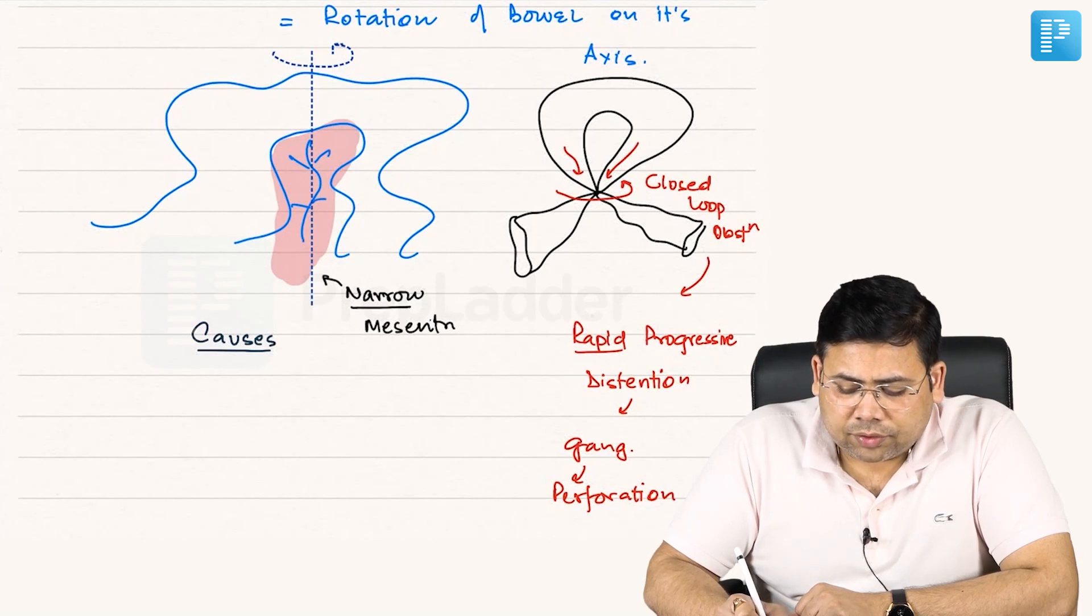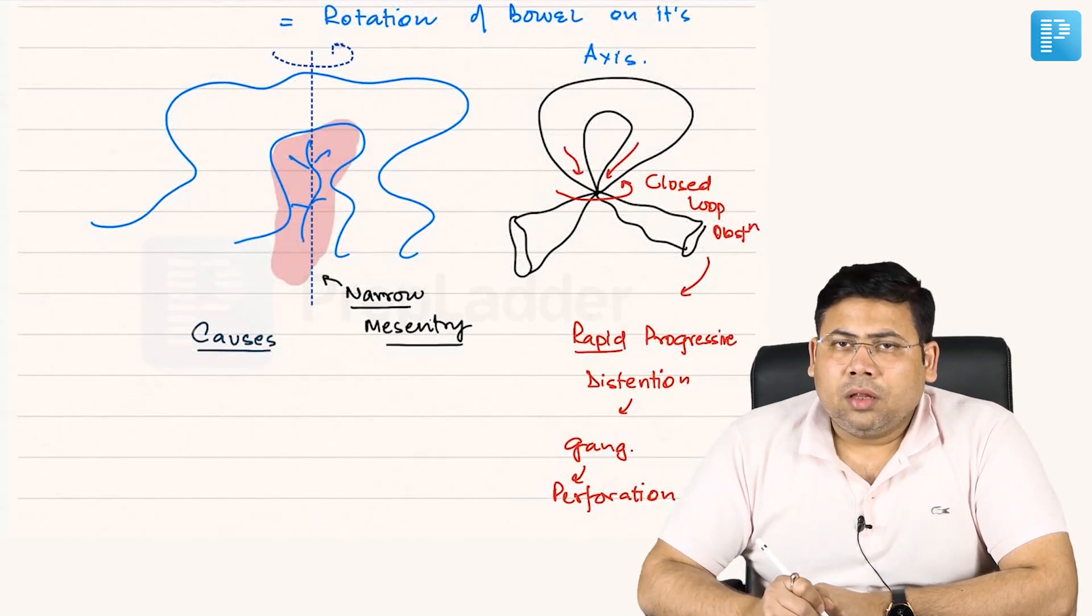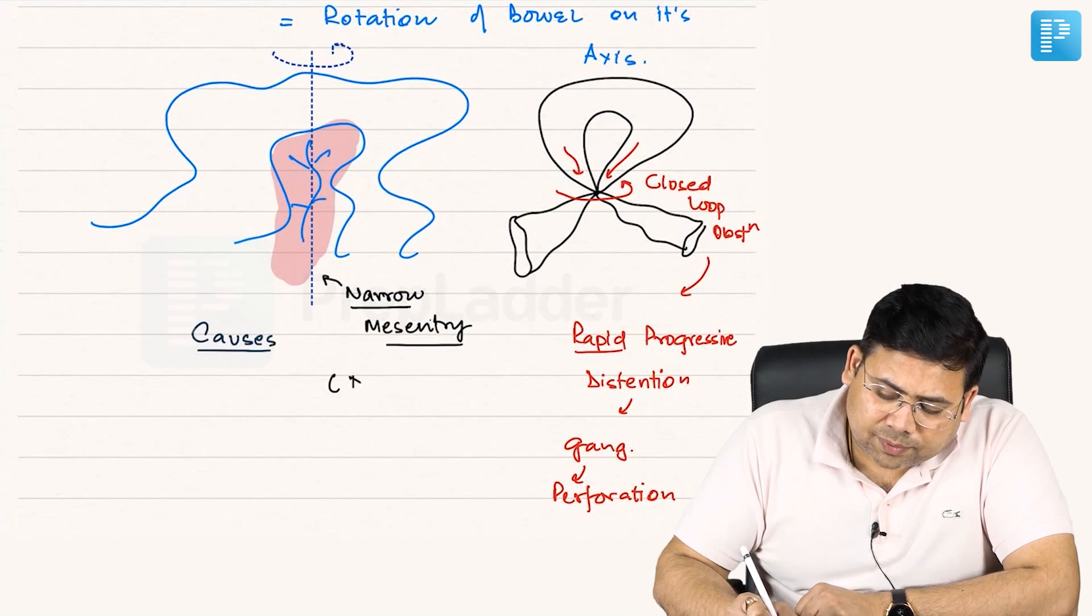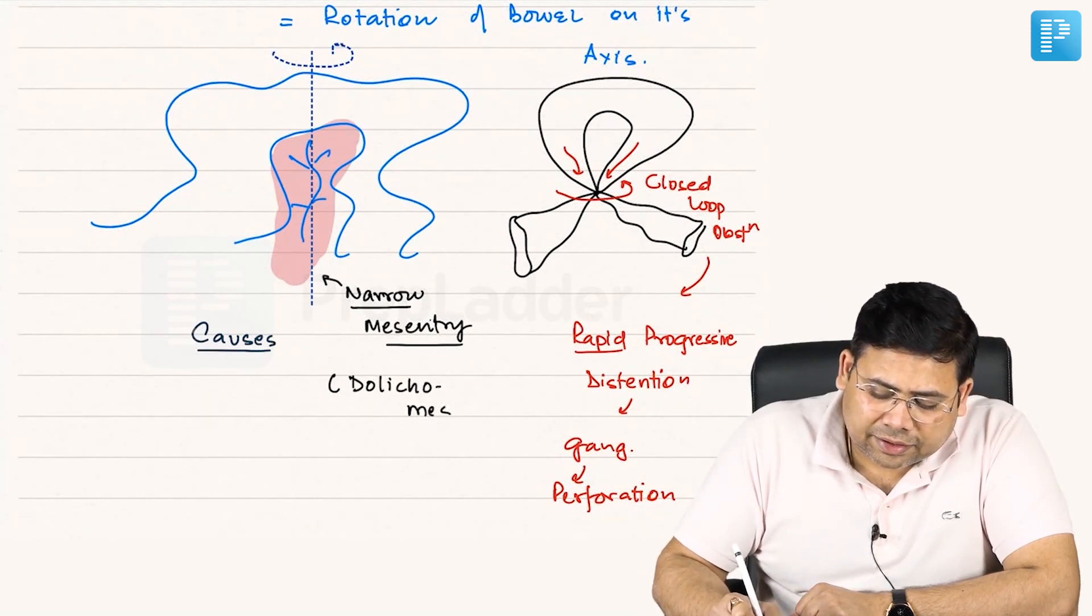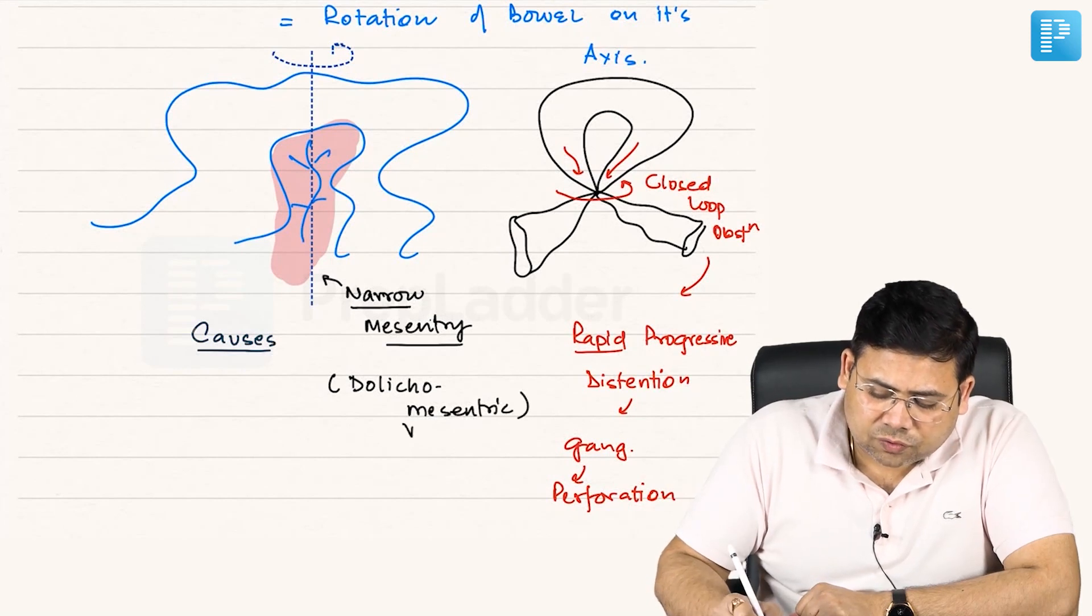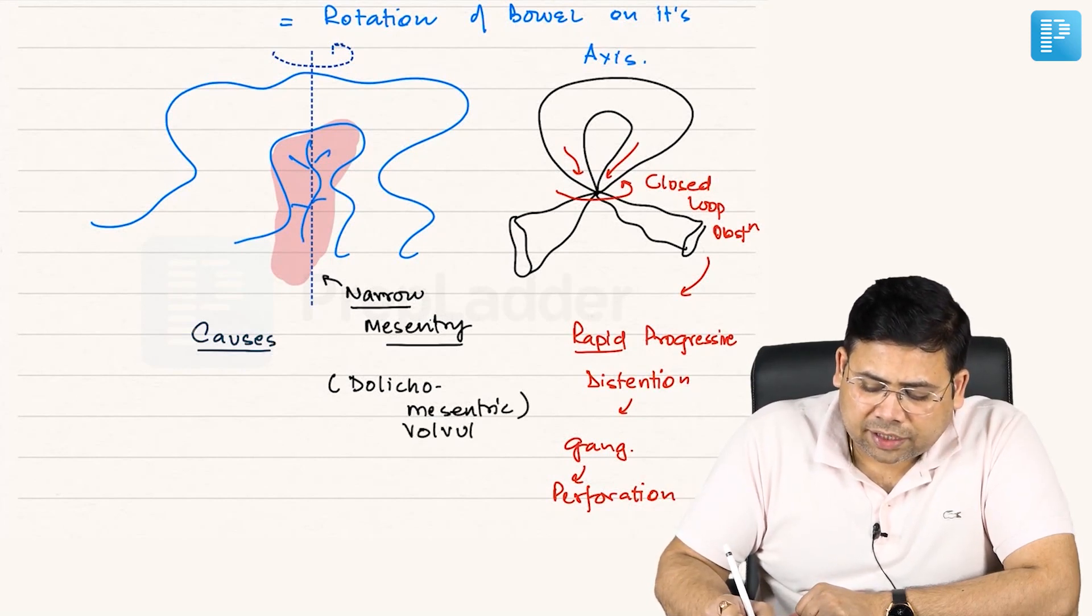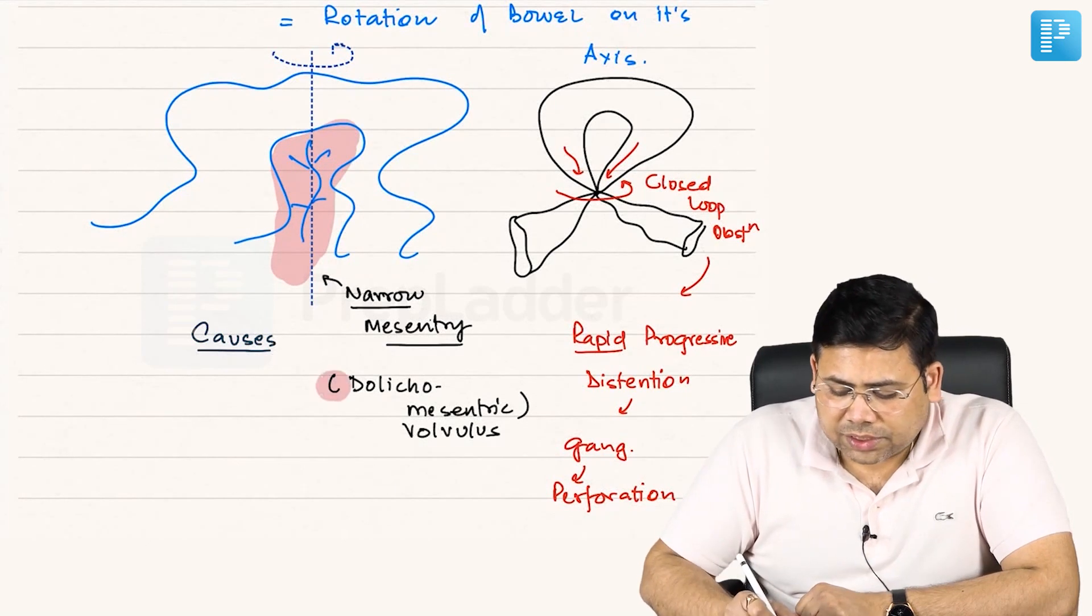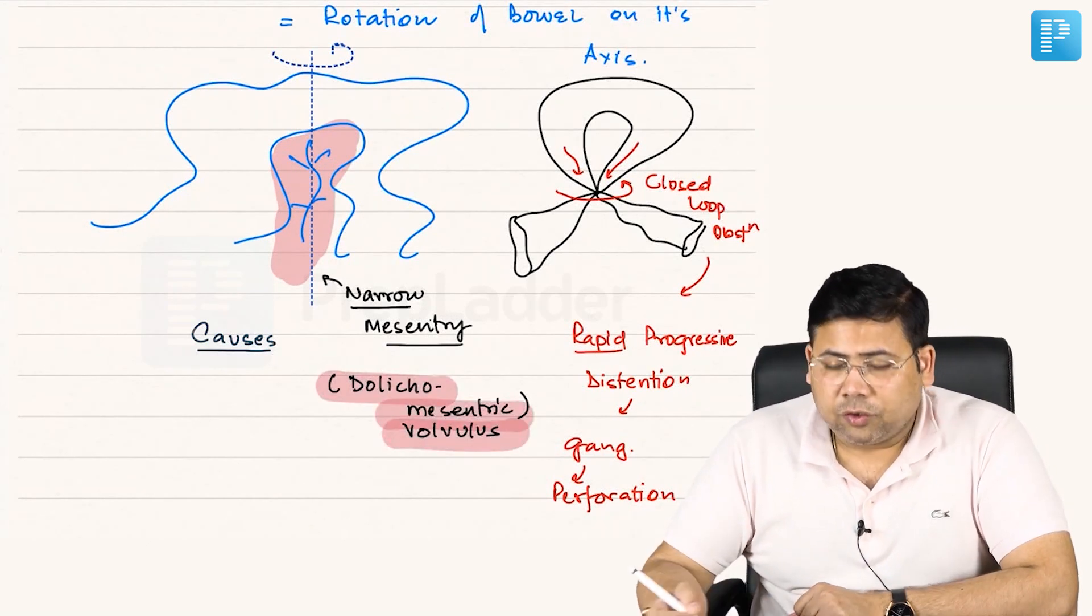This narrow mesentery concept is known as dolicomesocolic. Any narrow mesentery related volvulus is known as dolicomesocolic volvulus.